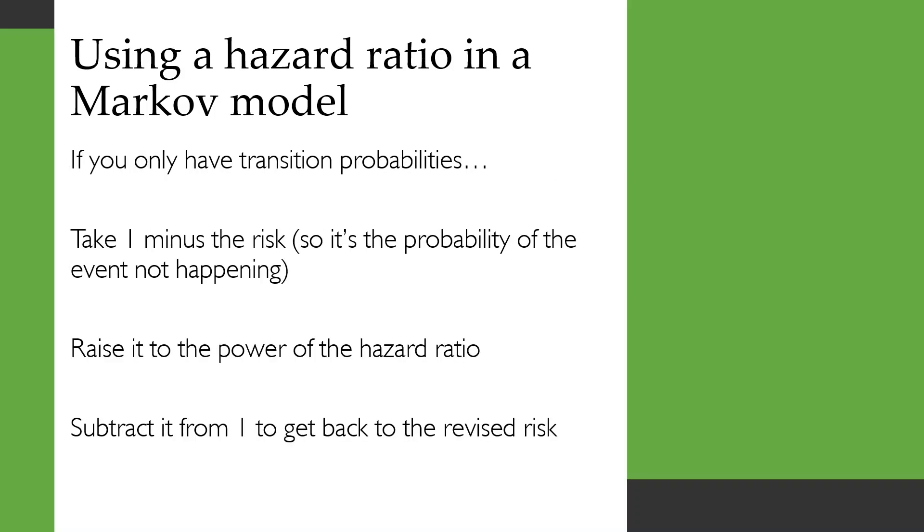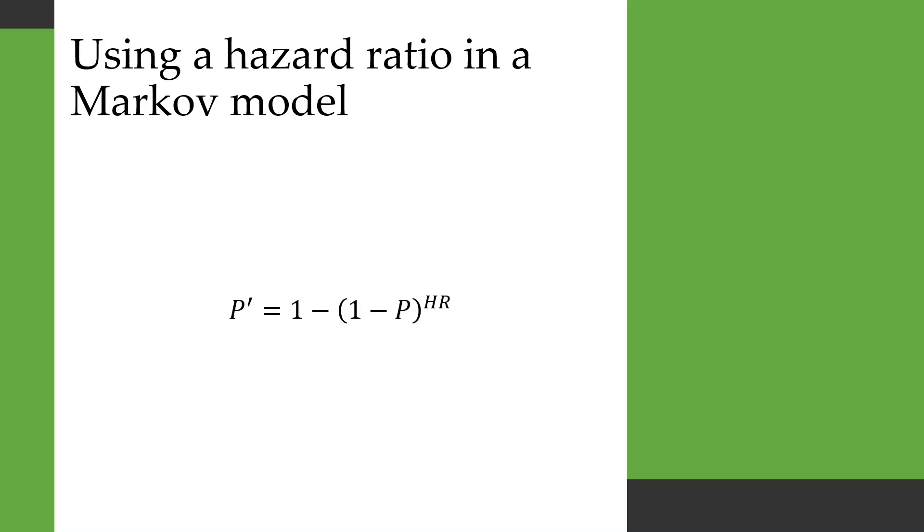But if for some reason you really only have transition probabilities and you can't work with the rates, you can take one minus the risk so that you now have the probability of the event not happening. You raise that to the power of the hazard ratio, and then you subtract the result of that from one to get back to the revised risk with the hazard ratio applied. So as a formula, that looks like this.